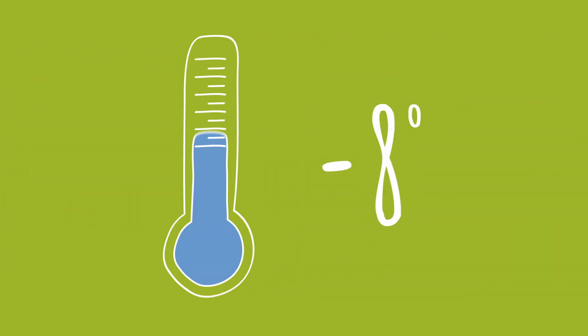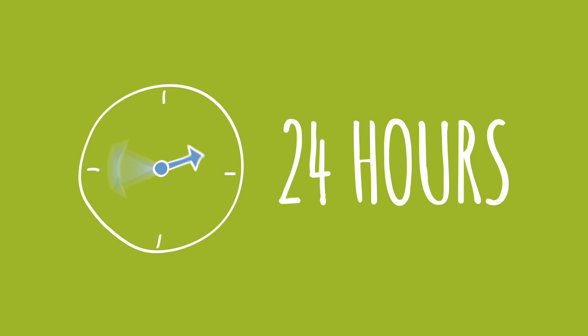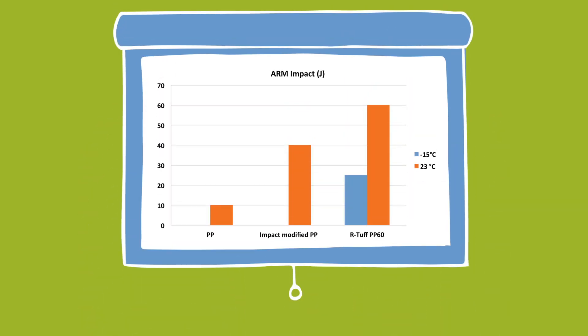The rotational moulding products were then cut and standard plaques were prepared. The plaques were then conditioned at minus 15 Celsius and room temperature for 24 hours before being impact tested. The graph you can see shows the results.